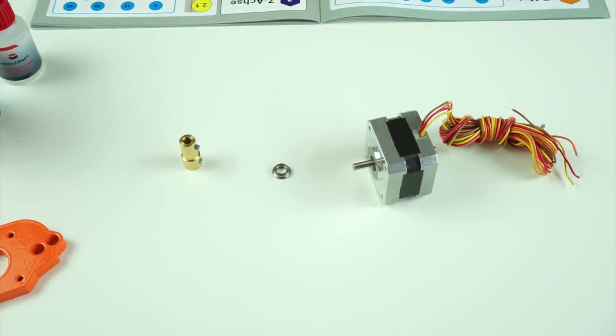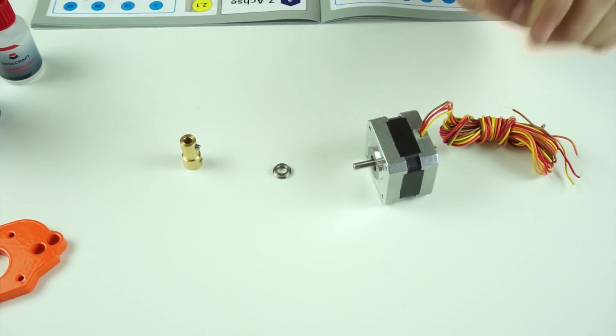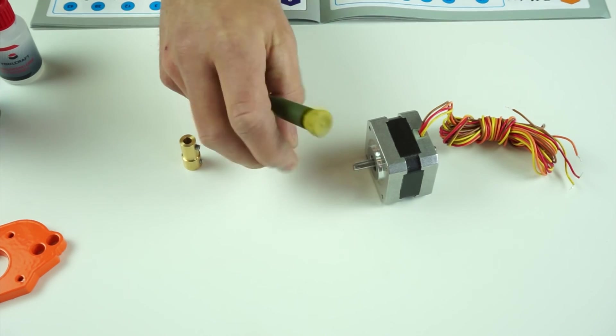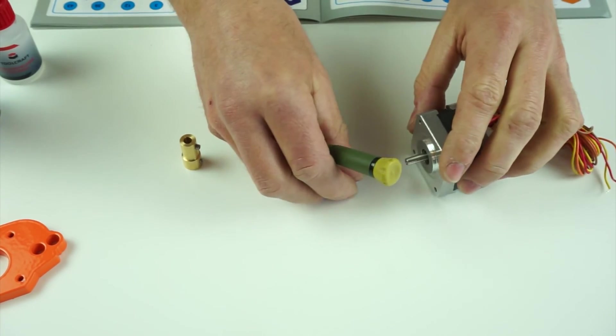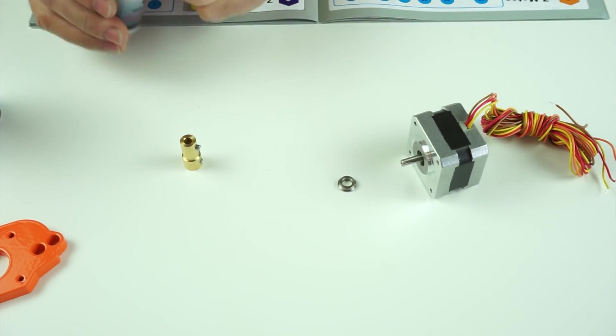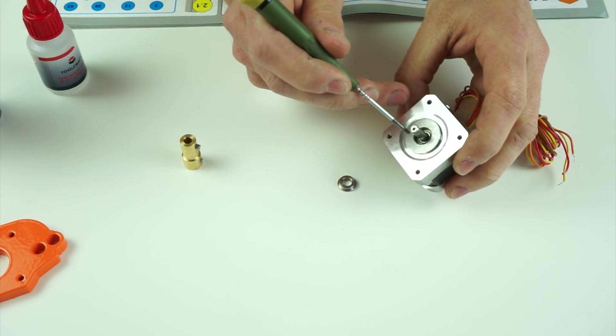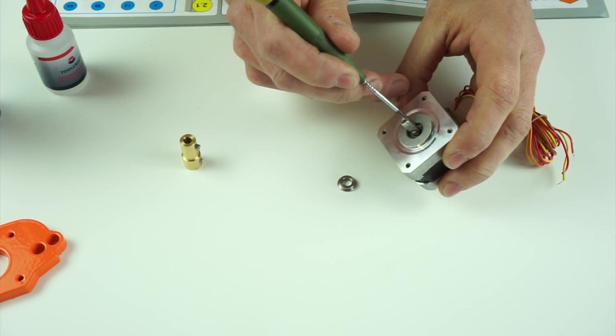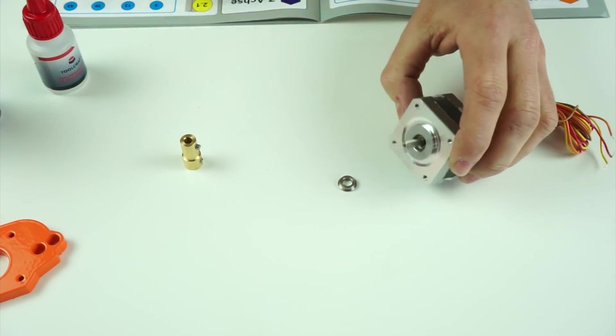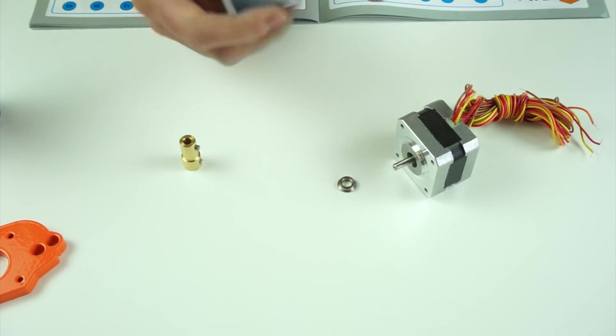Assembly step A.1: To prepare the stepper motor for installation, we need to secure the axial bearing, part number 22, to the motor. When doing this, be careful to only get glue on the inner bearing and the inner motor case. Do not let the glue get onto the motor's bearing.